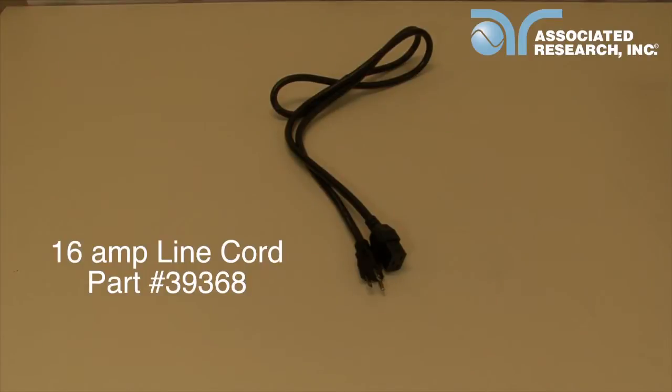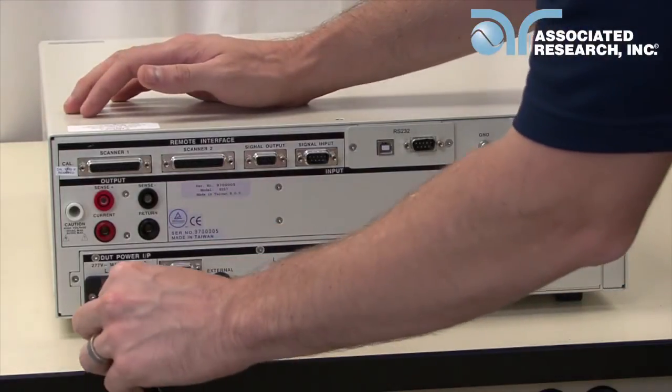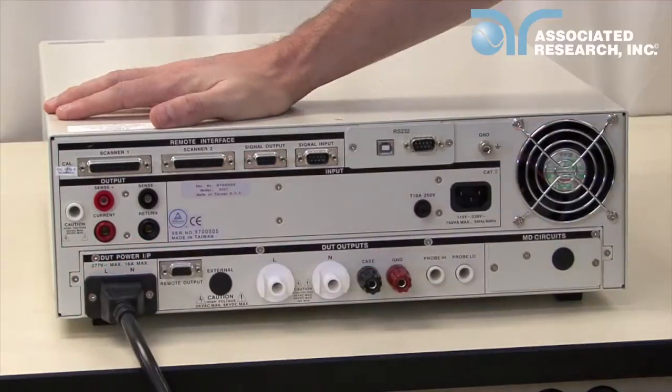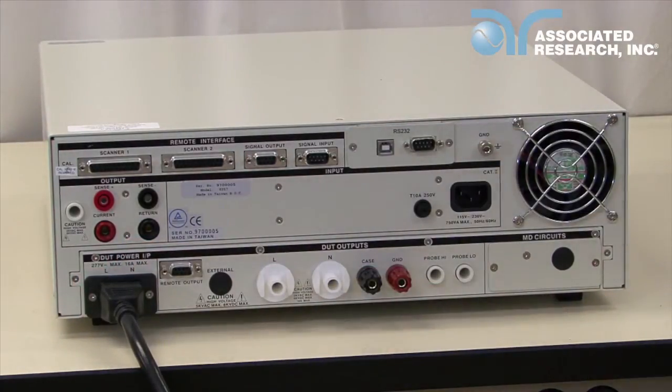In order to connect the external source, you'll need to use the 16 amp line cord, part number 39368. Connect the female end of this line cord to the DUT power input connector on the rear panel of the Omnia.